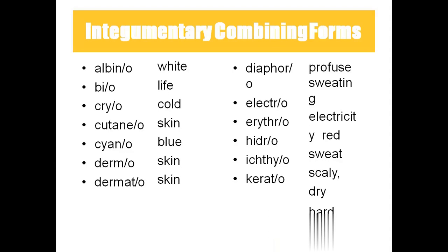Now let's see the medical terminology we use under the integumentary system. Albino means white — you will be very familiar with this word, like albino peacock and albino tiger, which are white peacock and white tiger. Albinism means lack of melanin; the skin will not produce melanin, so because of the absence of melanin their skin will be white in color.